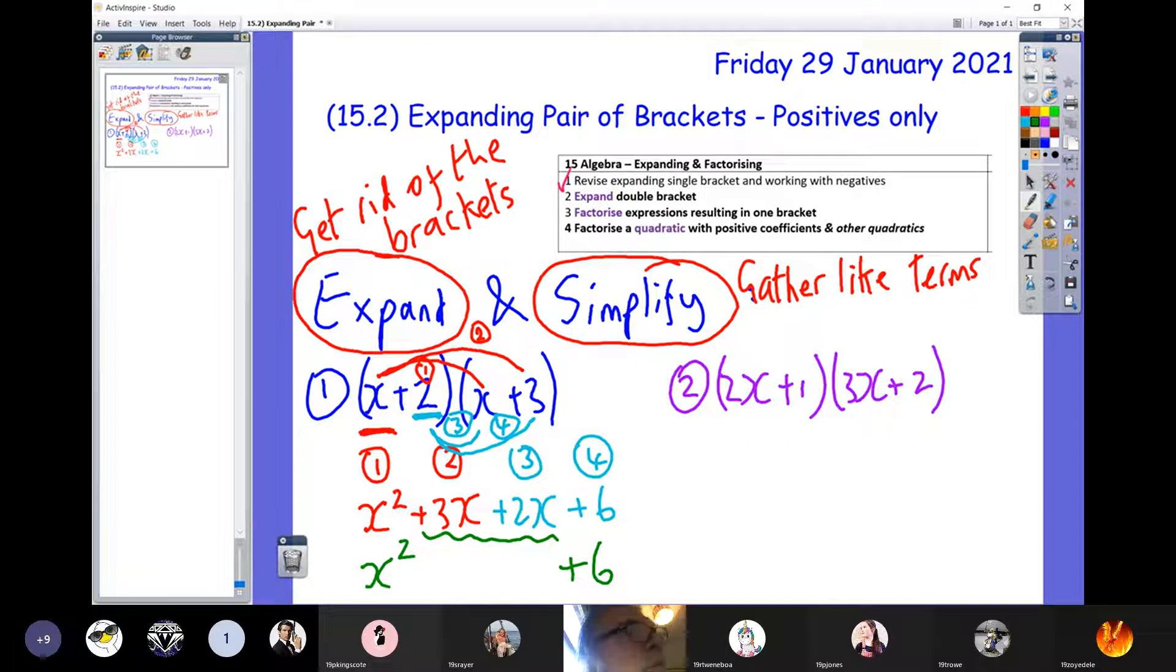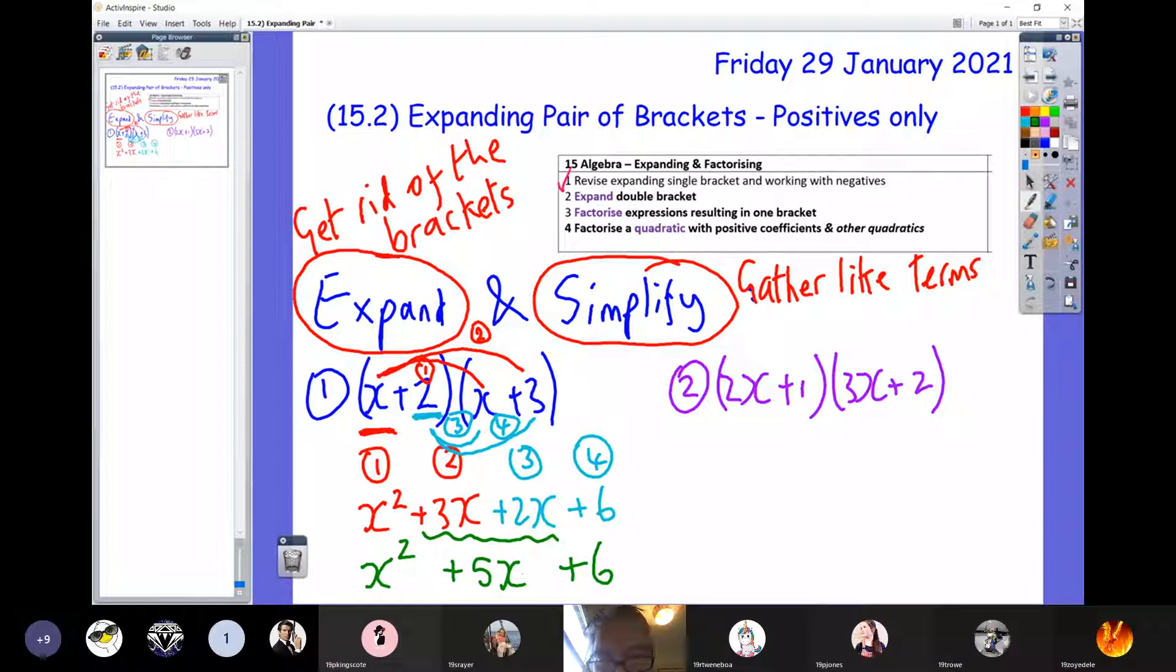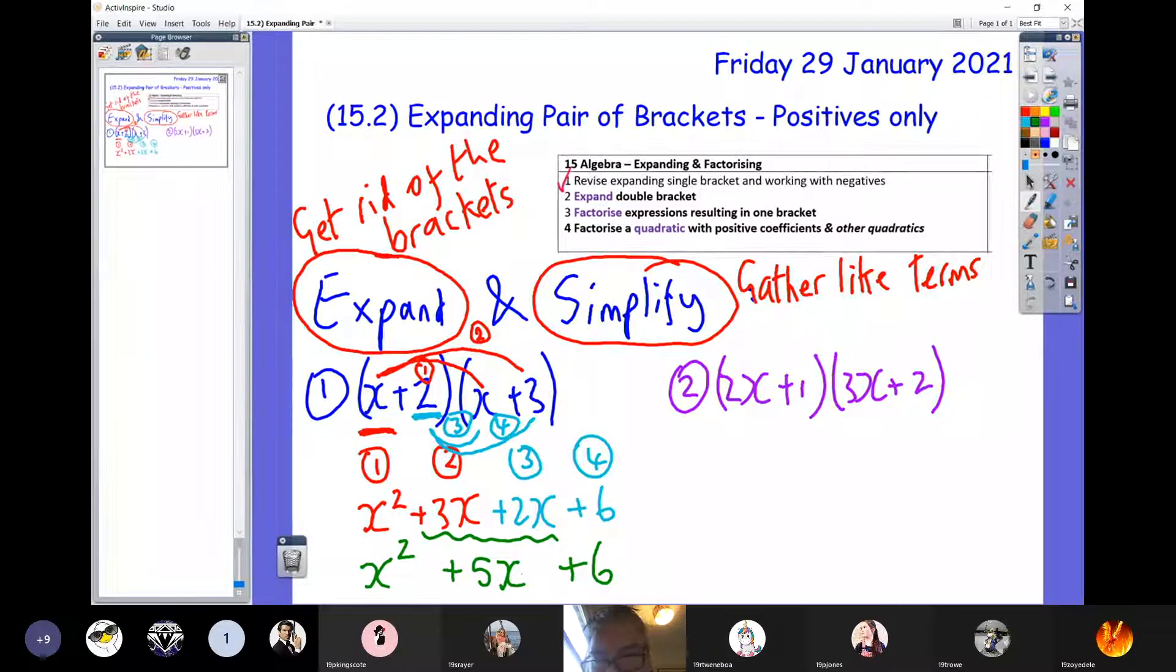We can gather up all those x's in the middle. Plus 3x plus 2x is plus 5x, and that would be our final answer. You've got to be very careful. Step one, when you are doing those claws, you are multiplying. But step two, when you gather those like terms, that bit in green, you are adding. Try not to get in a muddle.